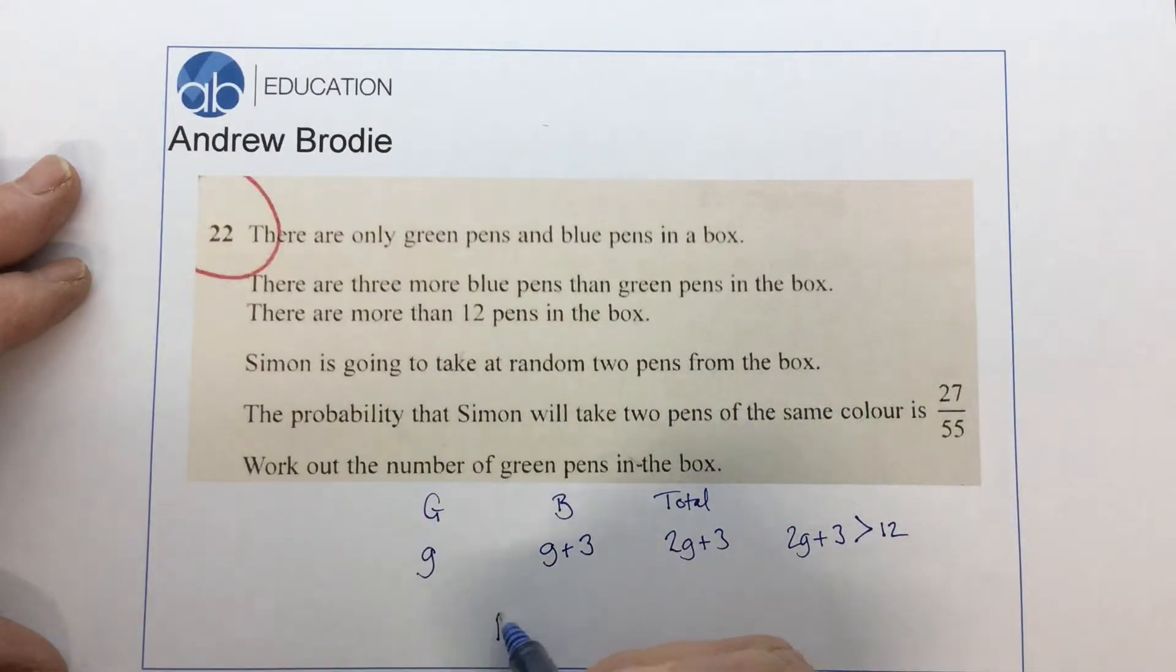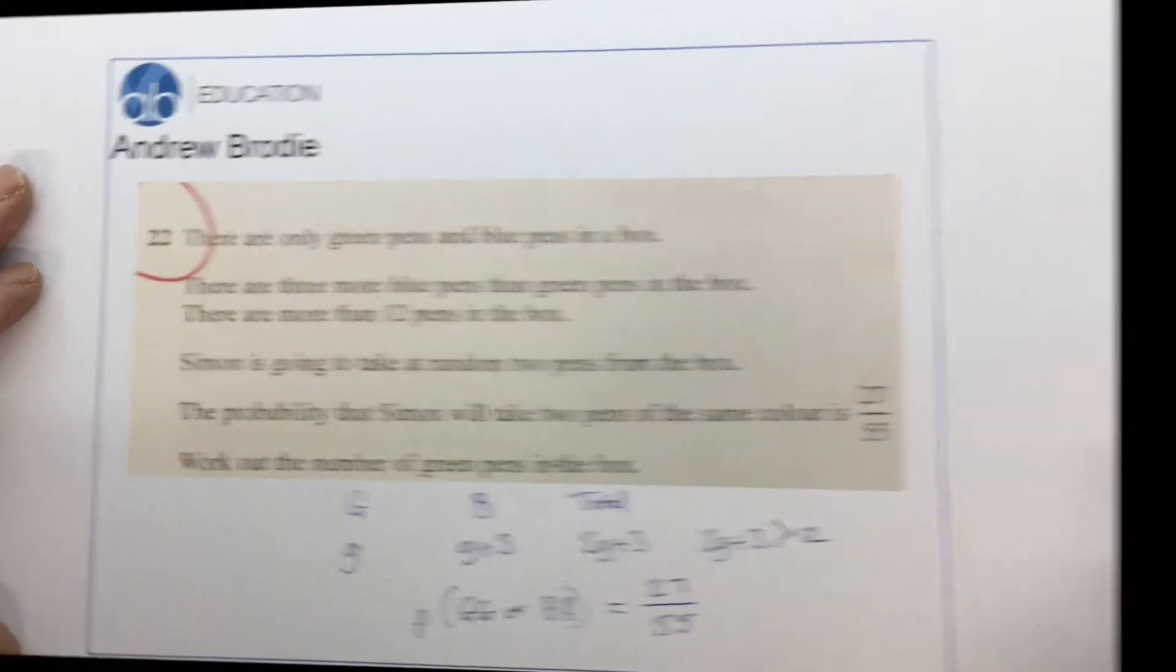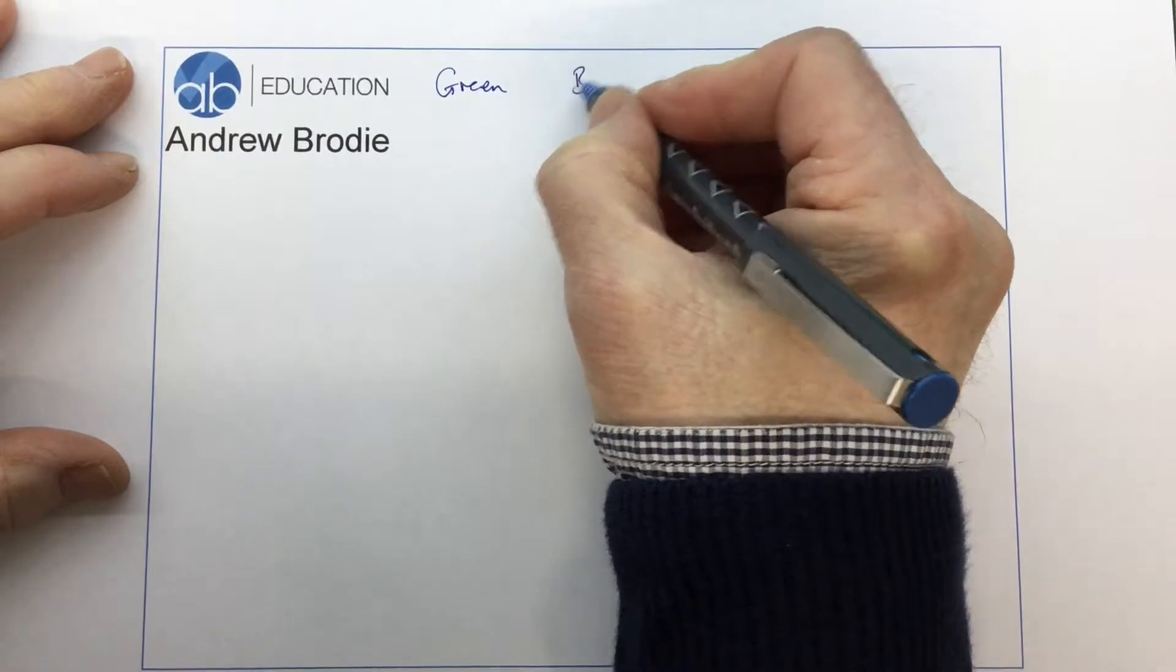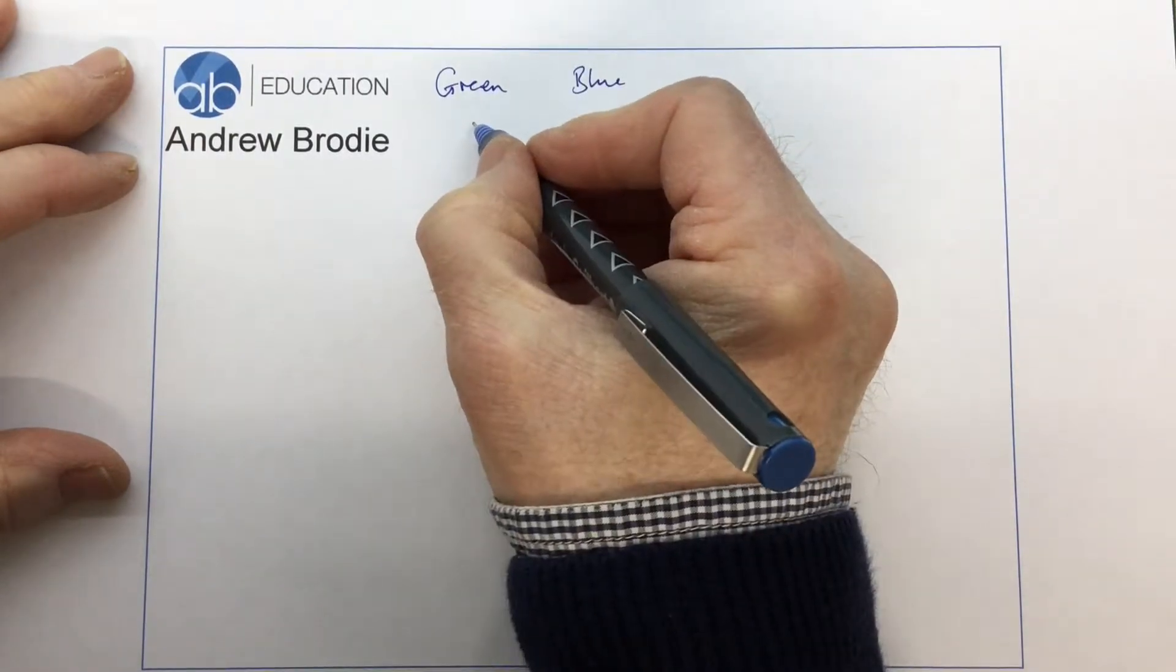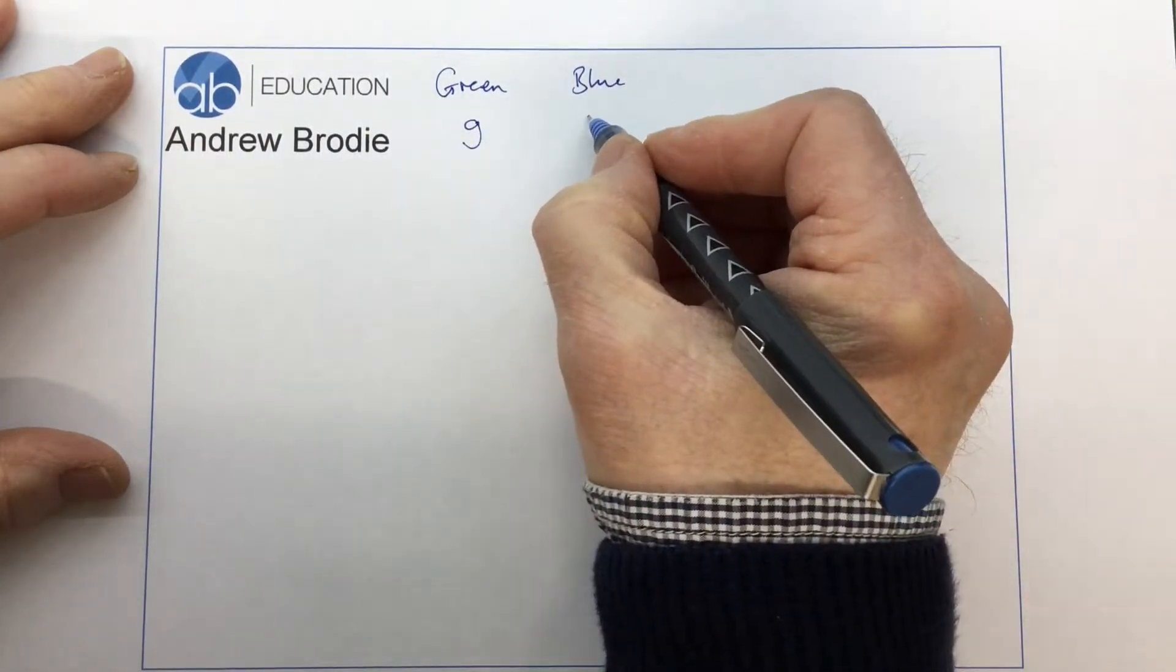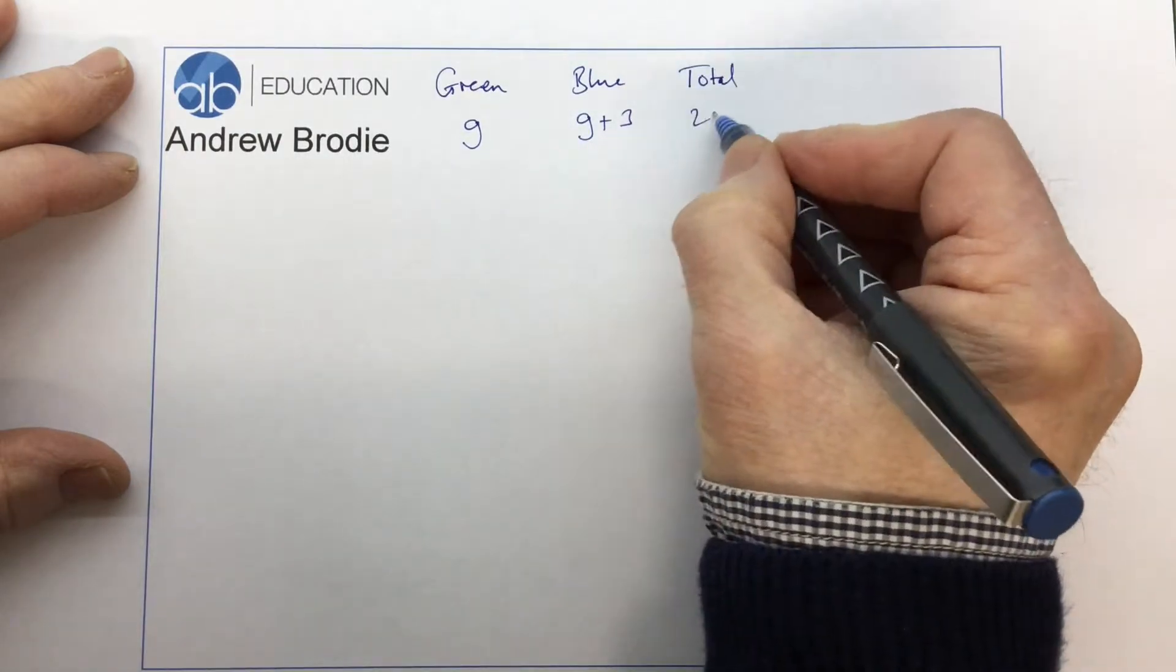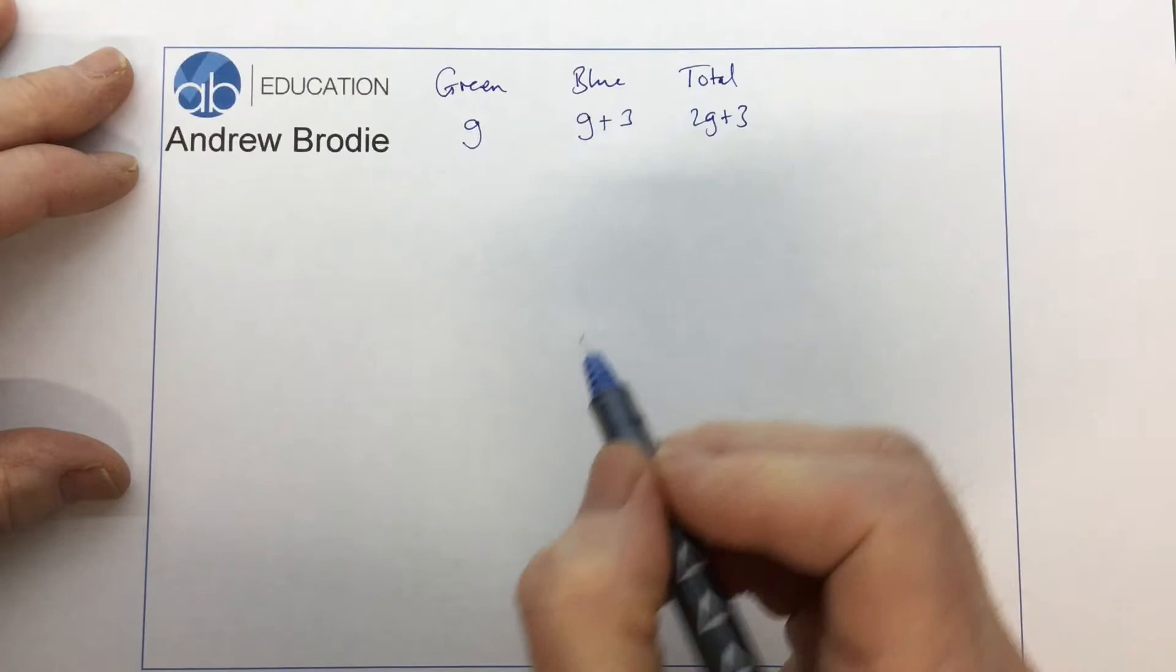So we know that the probability of getting a green and a green or a blue and a blue is 27 over 55. So that's the rules we've got to play by. Let's remind ourselves of what we know. We've got g green pens and blue pens represented by g plus 3. We know that the total is 2g plus 3. Let's work from there.